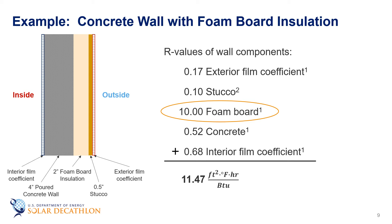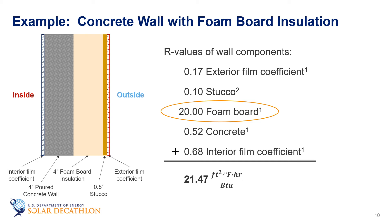The strategy, perhaps, to increase the insulation of this wall would be to add two more inches of foam. So now I have R-20 for the foam, and I could repeat our calculation.